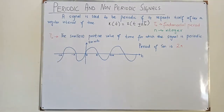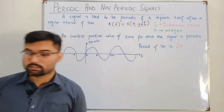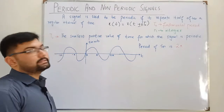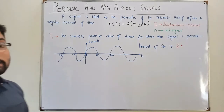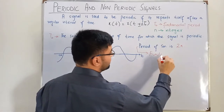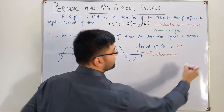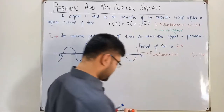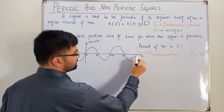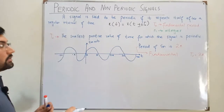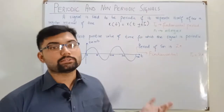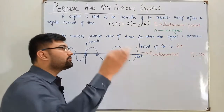The period of sine is 2π, not π. So the fundamental period P₀ = 2π for the sine wave. After 4π this function will also repeat, and after 6π as well — so 4π and 6π are also periods of the sine wave, but they are not the fundamental period.